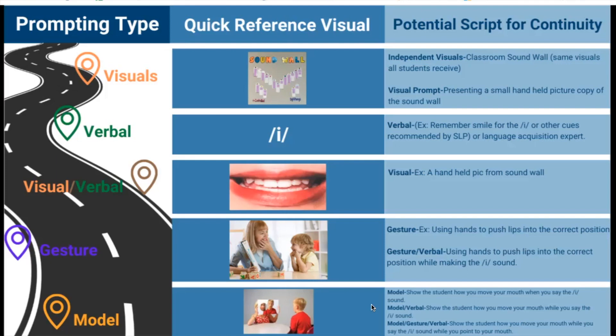The last one that we tend to fall back on — and that Mr. Accord really used a lot — is the model, where the adult shows the student how to make the sound, verbally describes it, and pairs that with a gesture pointing to the mouth. Some people use a mirror, like in this picture here. One thing to also talk about is approximations — that approximations can be accepted.